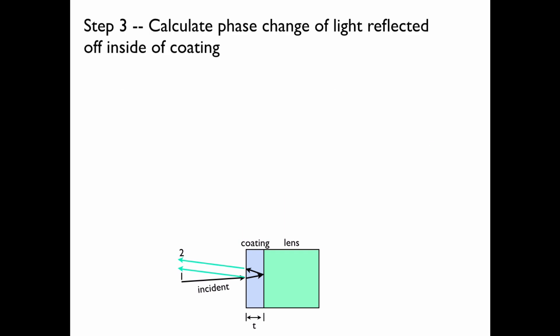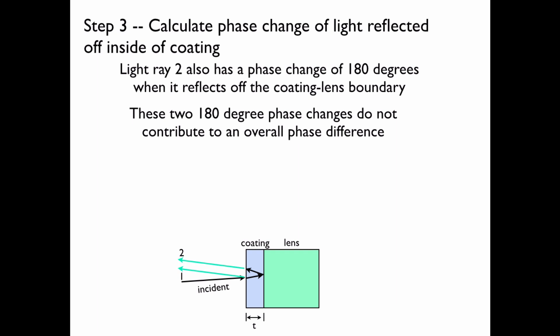Now we'll calculate the phase change of the light reflected off the inside of the coating, that is light ray 2. First of all, light ray 2 also has a 180 degree phase change when it bounces off the coating lens boundary. And because light ray 1 and light ray 2 both have 180 degree phase changes upon their reflection from the boundaries, independent of the wavelength, they do not contribute to an overall phase difference. Remember, we're interested in having an overall phase difference of 360 degrees for constructive interference of light of 520 nanometers. So the phase difference, however, does come from the path length difference.